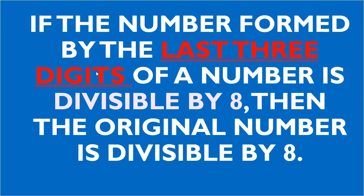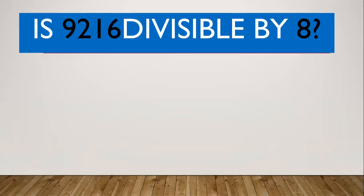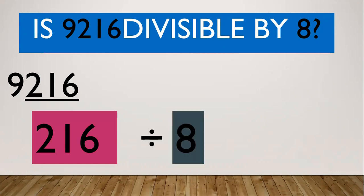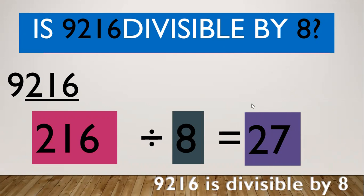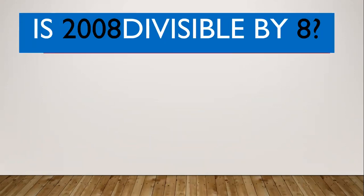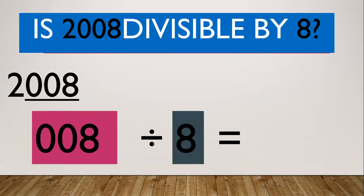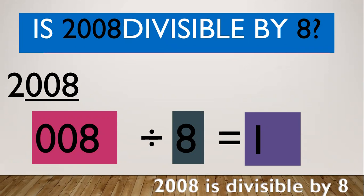For example, is 9,216 divisible by 8? The last three digits formed is 216. Then check if 216 is divisible by 8. 216 divided by 8 equals 27, so we get the exact value. Therefore, the original number, 9,216, is divisible by 8. Another example: is 2,008 divisible by 8? The last three digits formed is 008. 8 divided by 8 equals 1. So therefore, 2,008 is divisible by 8.